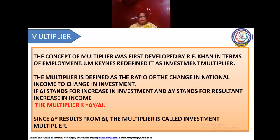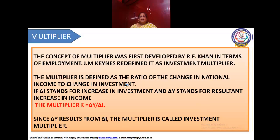What is Multiplier? The concept of Multiplier was first developed by R.F. Kahn in terms of employment. J.M. Keynes redefined it as the Investment Multiplier. The Multiplier is defined as a ratio of the change in national income to a change in investment. ΔI stands for increase in investment, and ΔY stands for the resultant increase in income. The Multiplier K is equal to ΔY divided by ΔI.